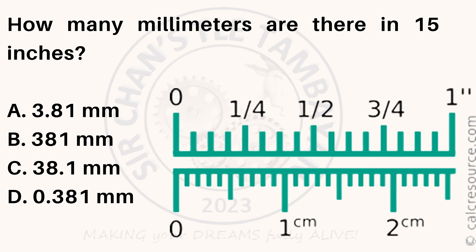How many millimeters are there in 15 inches? A. 3.81 millimeters. B. 381 millimeters. C. 38.1 millimeters. D. 0.381 millimeters.